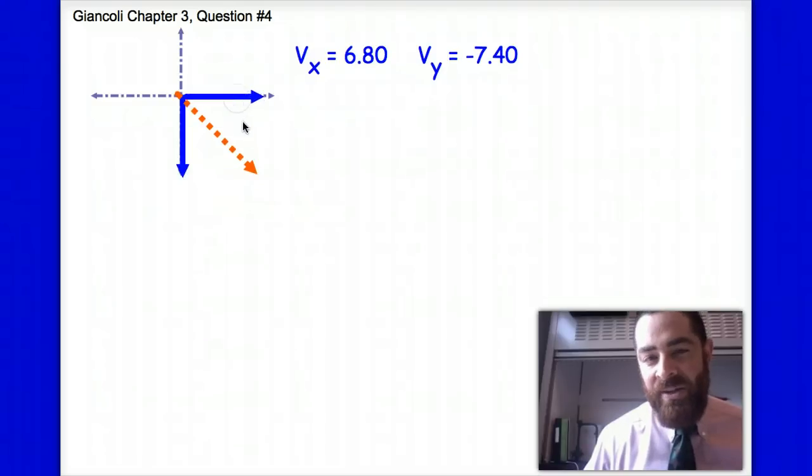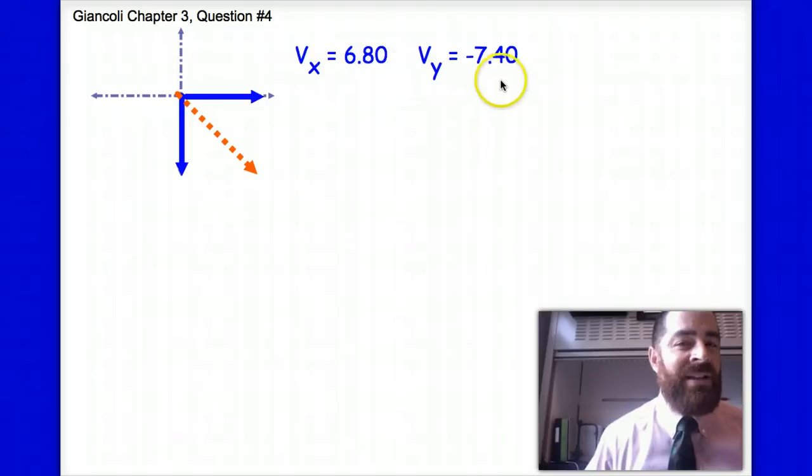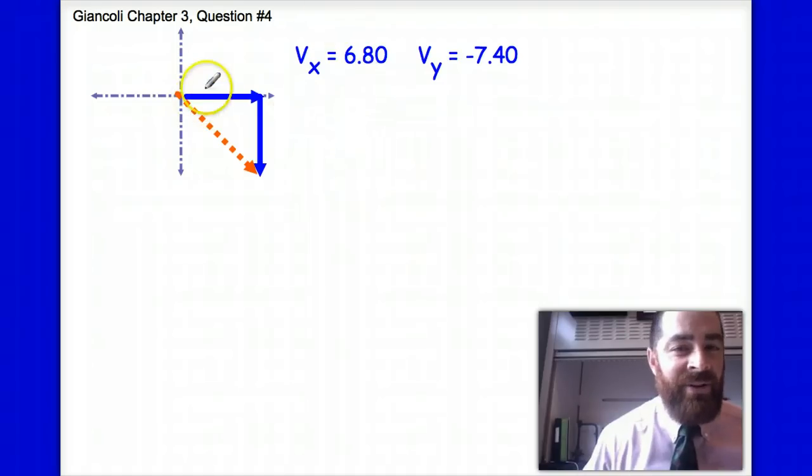So these vectors are unitless. I have these values here, and I should recognize that I can tune in to this right triangle here. I should start the problem by recognizing that I have the x component Vx and I have the y component Vy, and I'm basically looking for the magnitude of this resultant.